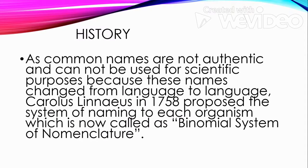As common names are not authentic and cannot be used for scientific purposes — because these names change from language to language — Carlos Linnaeus, in 1758, proposed the system of naming each organism, which is now called the binomial system of nomenclature.